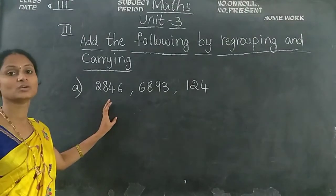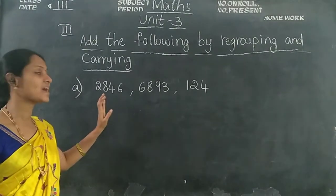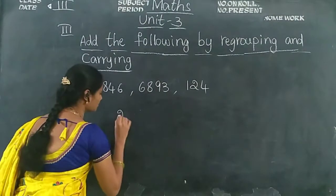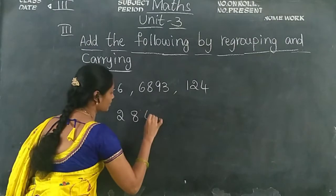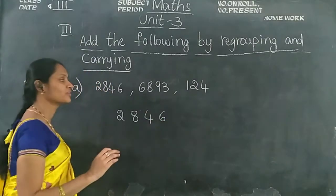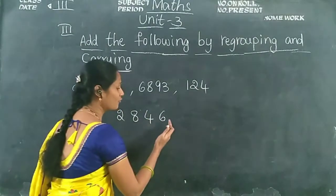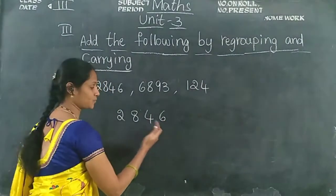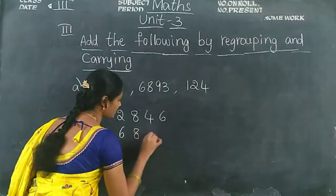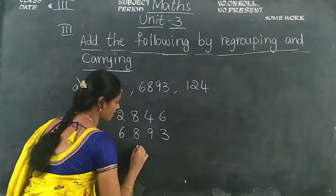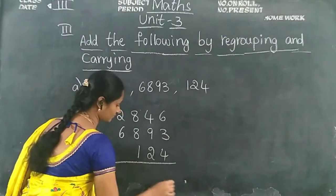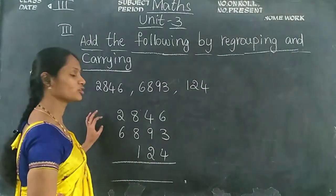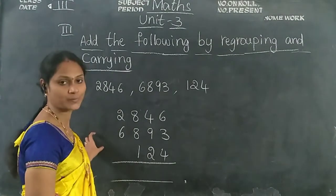First we are arranging the numbers according to the place value line. Children, 2,846 — any number we should write starting from the ones place. Then 6,893 and 144.